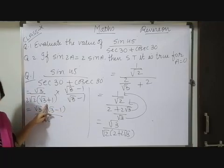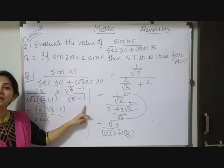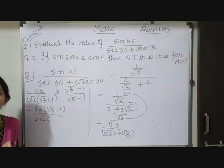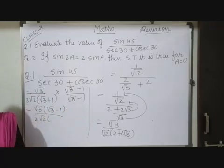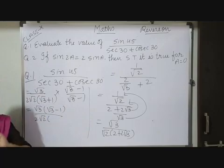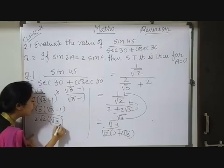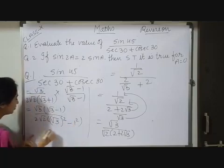Now students, it is nothing but a plus b, a minus b identity. So what is that? A plus b into a minus b, as we know, is a square minus b square. So as per the identity, here I can write root 3 square minus 1 square.